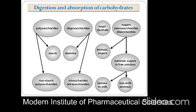Digestion and absorption of carbohydrates covers polysaccharides, oligosaccharides, and sugar monosaccharides. Polysaccharides contain starch and non-starch polysaccharides. Oligosaccharides contain dextrins, trisaccharides, and tetrasaccharides. Sugar monosaccharides include intrinsic sugars — sugar alcohols, glucose, and fructose — and extrinsic sugars in free solution, such as lactose from milk and non-milk extrinsic sugars.